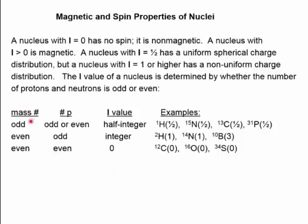If the mass number of the nucleus is odd, then whether the number of protons is odd or even, i will have the value one-half. If the mass number is even, there are two possibilities. If the number of protons is odd, then i will have an integer value — one, two, three, and so forth. If the mass number is even and the number of protons is even, then i equals zero and the nucleus does not spin.